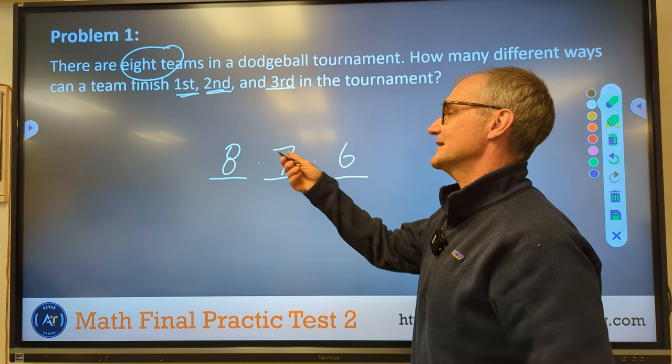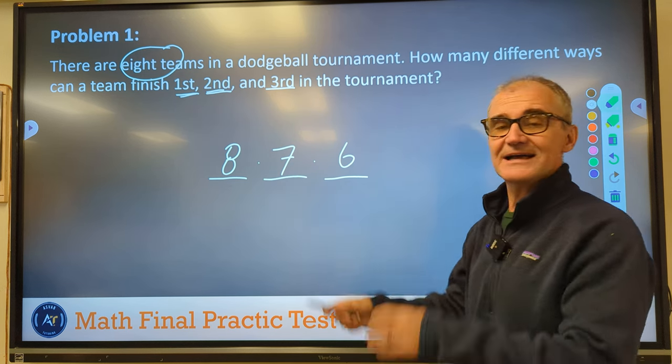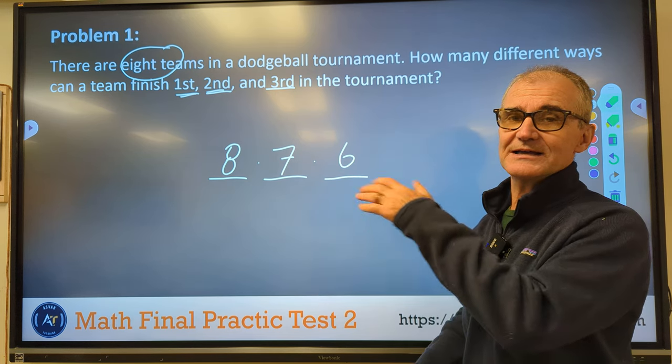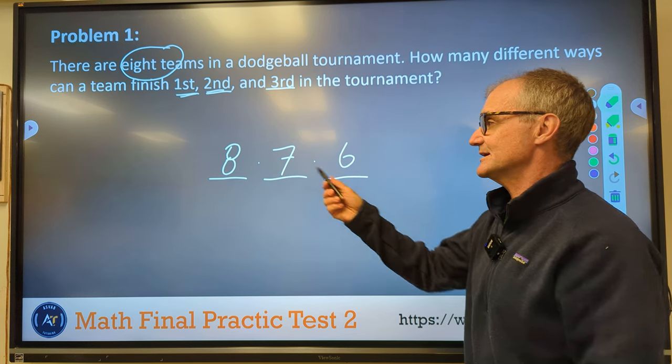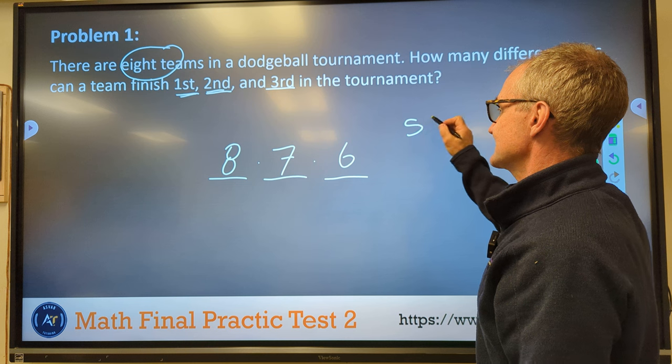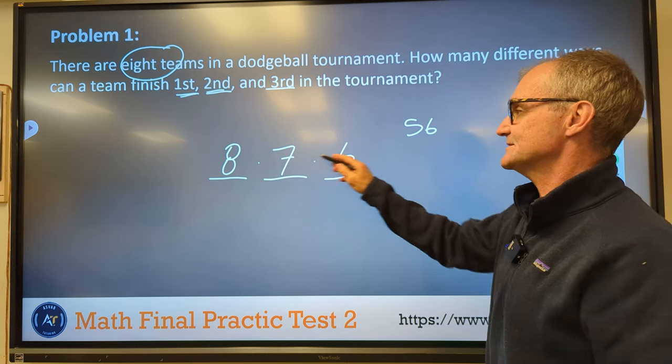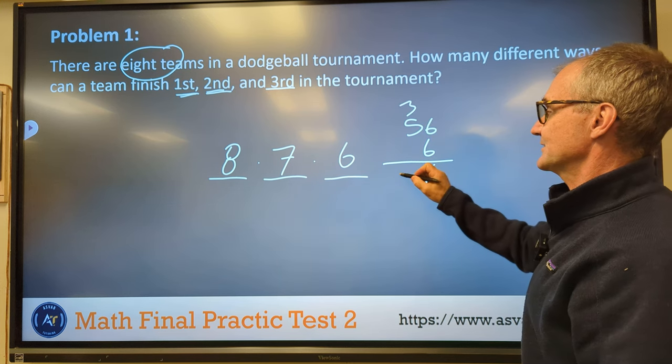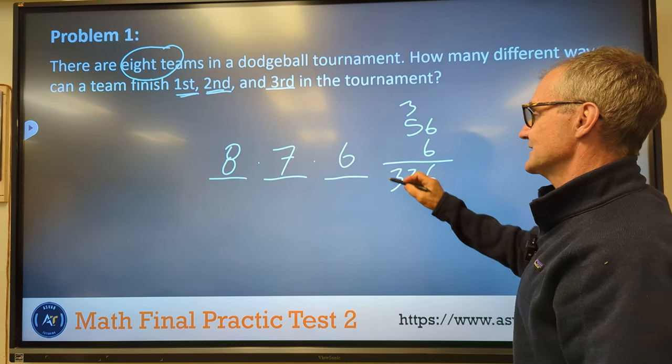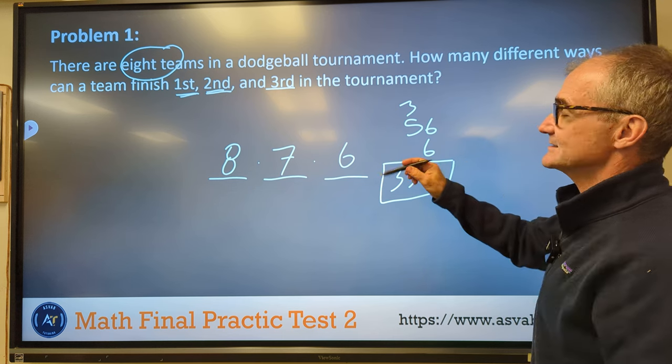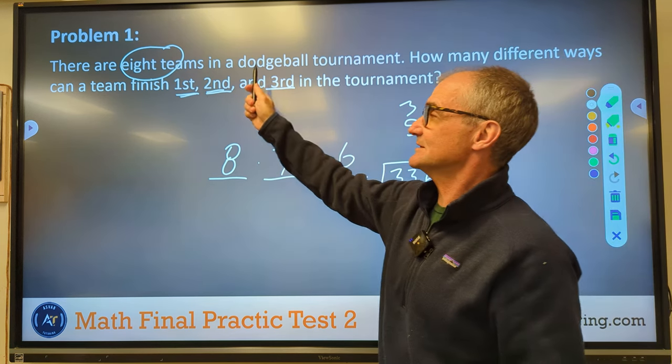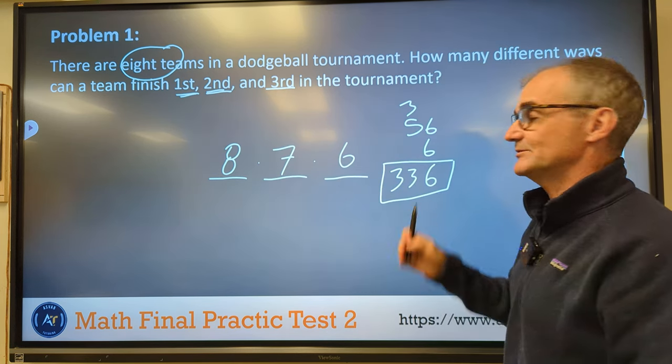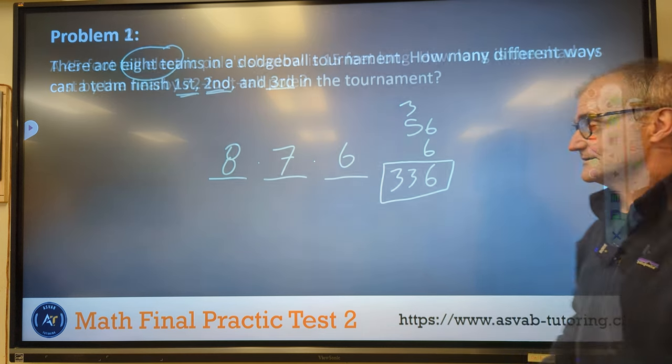So I have to do eight and then seven and then six. And means multiply. So I have to do eight times seven, 56, and then 56 times six, 36, carry the three, 30 plus three, 33. So the number of ways that eight teams could finish first, second and third is 336 ways.